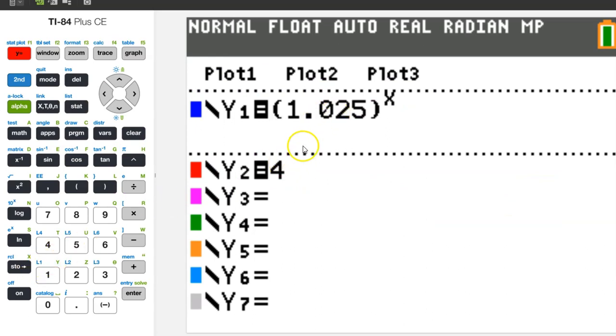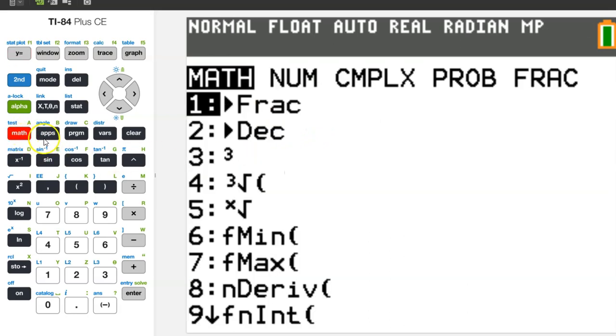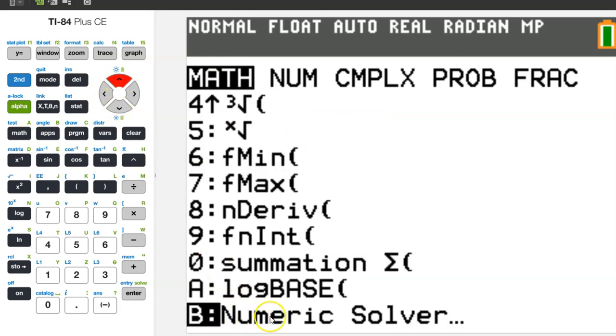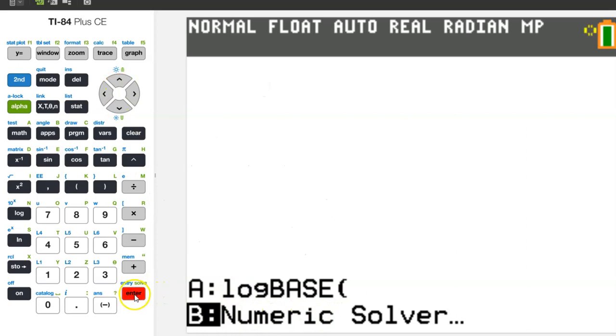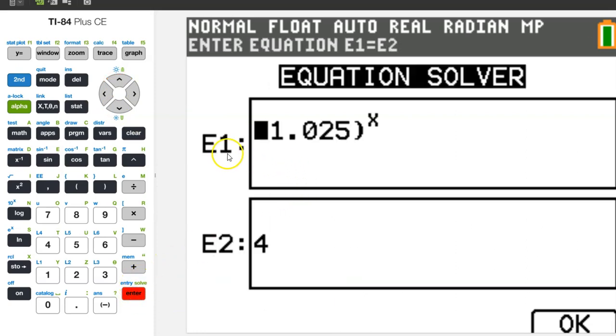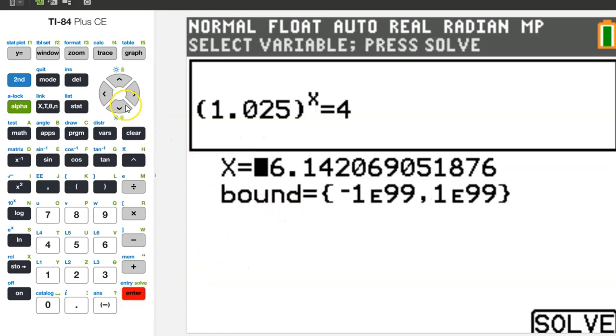Instead of graphing, you can solve simple equations like this one using the equation solver. If you want to try that out, hit the math button and scroll up. The bottom option is the numeric solver, so just hit enter. Type in the left side of the equation as equation 1 and type in the right side of the equation as equation 2, and then just hit enter. And there's your solution. 56.142, which is the same answer that we got by graphing.